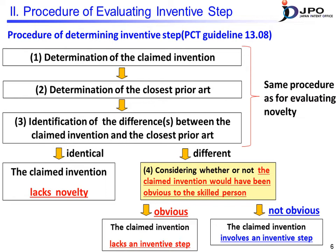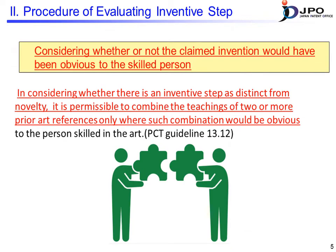So, how is inventive step determined? By way of example, imagine a case where structures A and B of the claimed invention are disclosed respectively in prior art 1 and prior art 2. Can we combine the disclosures of prior art 2 unconditionally to conclude that the claimed invention has no inventive step? The PCT guidelines state that examiners are allowed to combine two or more examples of prior art to deny inventive step for the claimed invention, if the combination is obvious to a person skilled in the art. In other words, the combination of prior art is not allowed unconditionally.